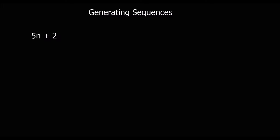In this video we're going to use the rule of a sequence to generate a sequence — we're going to use a rule to find out what the numbers are in the sequence. Here's a rule: 5n + 2. What n is, is the position in the sequence.